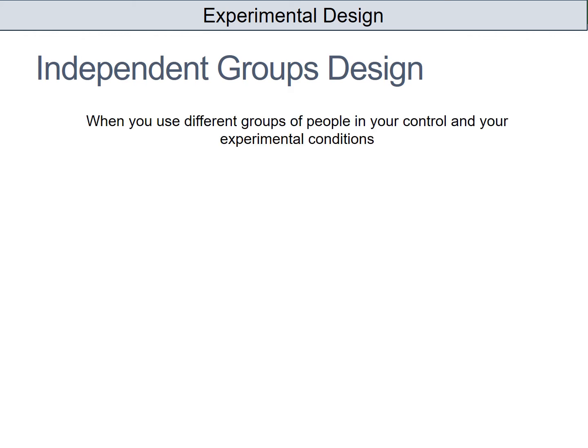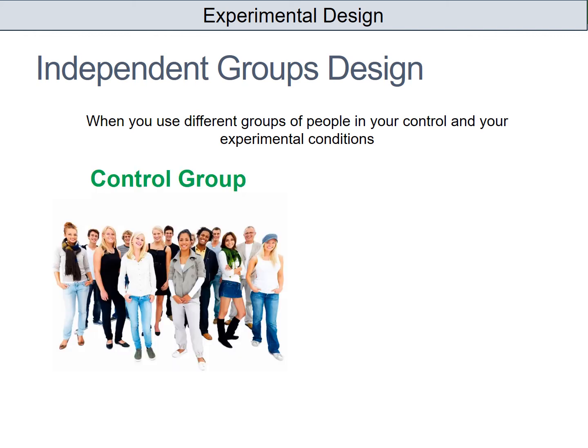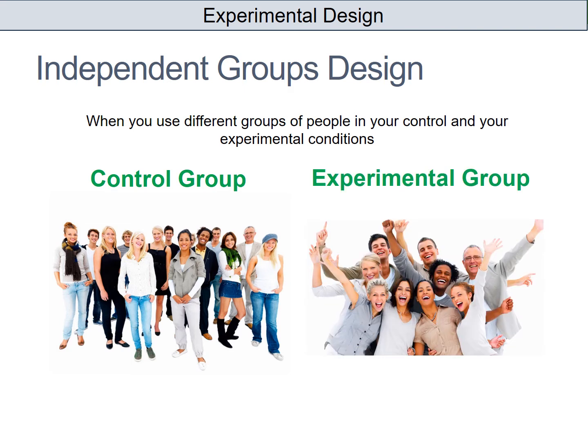The second type of design is an independent groups design. This is when you use two different groups of people in your control and experimental conditions. So your control group would do a particular task, and then for your experimental group you would use a completely different set of people.